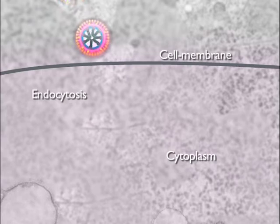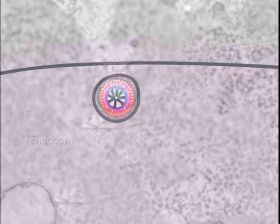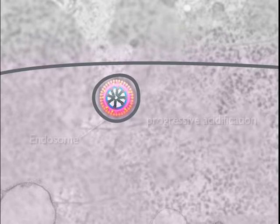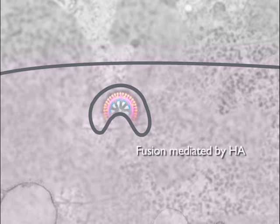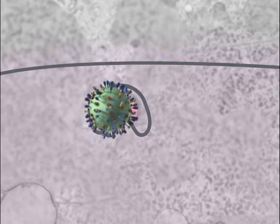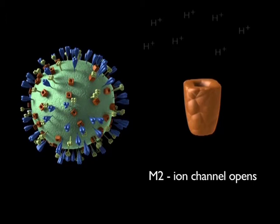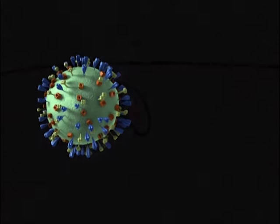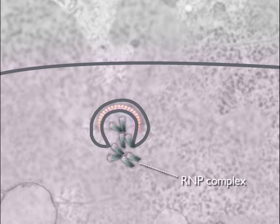During endocytosis, the endosome becomes progressively acidified. At reduced pH, the viral HA protein mediates fusion of the viral envelope with the endosomal membrane. However, this fusion event alone does not cause viral uncoating. The ion channel M2 envelope protein opens in response to acidification and allows protons to enter the virion. As a result, the viral capsid dissociates from the ribonuclear protein core, releasing it into the cytoplasm.